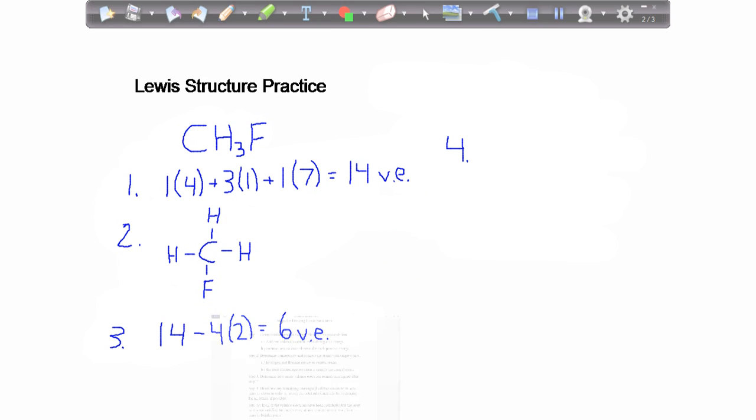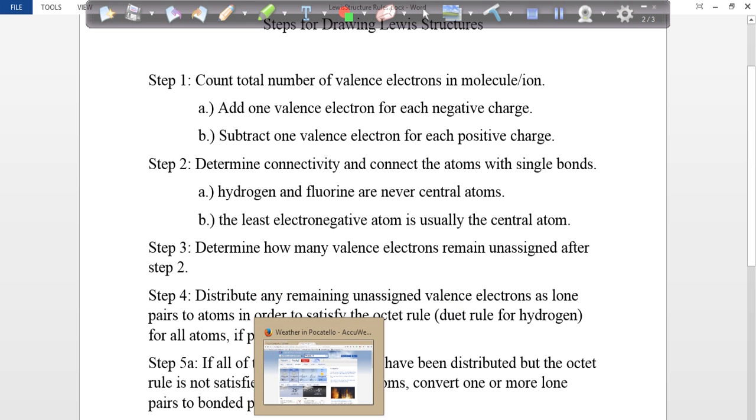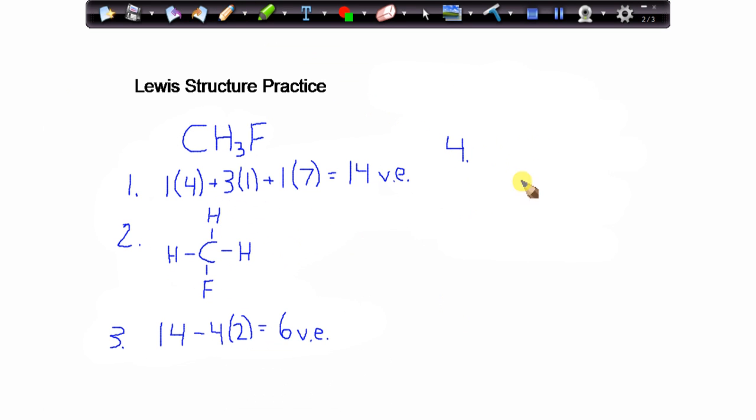In step four, then, I want to distribute any remaining or unassigned valence electrons as lone pairs to any atom that has yet to satisfy the octet rule or the duet rule for any hydrogen atom. So before I really get into this step, what I like to do is redraw my structure from step two. So we'd have carbon, hydrogen, hydrogen, and I do this to see how my structures progress as I've gone through these systematic steps.